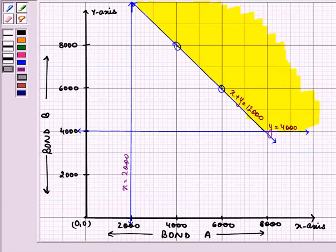So this is our required graph. This is the line representing the equation X is equal to 2,000. This is the line representing the equation Y is equal to 4,000. And this is the line representing the equation X plus Y is equal to 12,000. This shaded region is the portion that is satisfying all these inequalities.